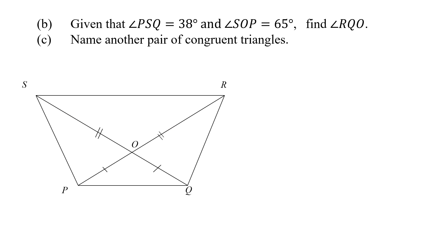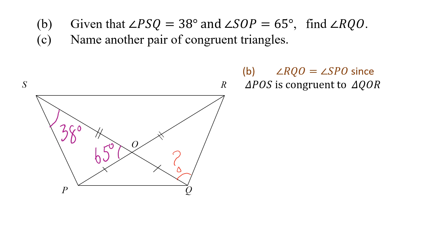For part B, we're given that angle PSQ equals 38 degrees and angle SOP equals 65 degrees. We are asked to find angle RQO. Since we proved in part A that triangle SOP is congruent to triangle ROQ, the corresponding angles are equal. Therefore angle RQO has the same value as angle SPO, which is 180 minus 38 minus 65 — that gives 77 degrees.